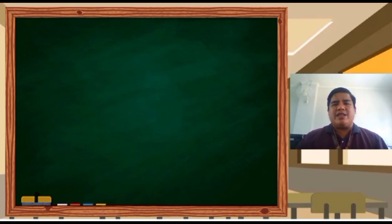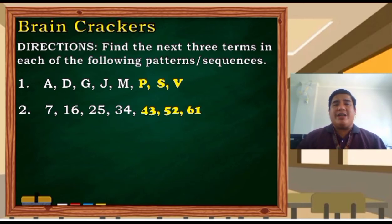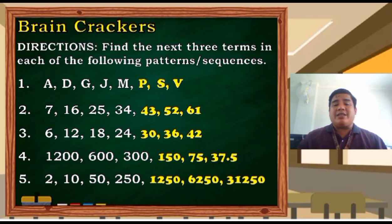Okay, let us check your activities. For number one, the next three terms are P, S, and V. You are just skipping two letters at a time. Number two: 43, 52, 61. You just add nine from the preceding terms. Number three: 30, 36, 42. We just add six. Number four: 150, 75, 37.5. We are dividing the preceding term by two. Last one: 1250, 6250, 31250. We are multiplying the preceding term by five. Okay, so much for that.